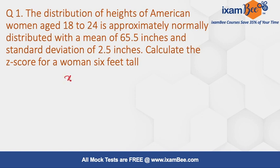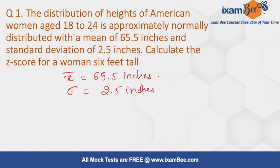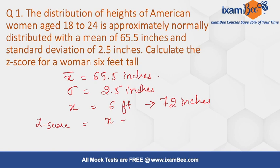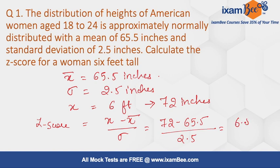The mean x-bar is 65.5 inches, and the standard deviation is 2.5 inches. The value for x is 6 feet, which we first convert into inches — that becomes 72 inches by multiplying with 12. The formula for z-score is x minus x-bar upon standard deviation. Substituting: 72 minus 65.5 upon 2.5 equals 6.5 upon 2.5, which equals 2.6.